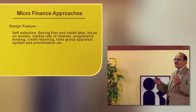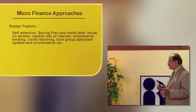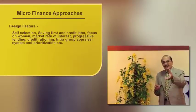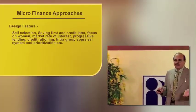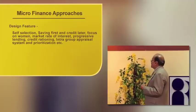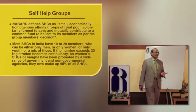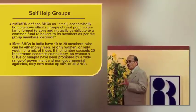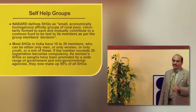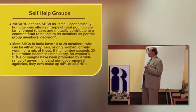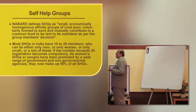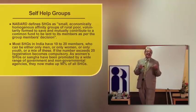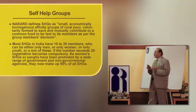The group works first by members contributing savings, and they are given interest on the savings pooled together. To give interest, there should be some earning, so lending activity takes place within the group at a rate of interest decided by the members. NABARD has defined SHG as small, economically homogeneous affinity groups of rural poor, voluntarily formed to save and mutually contribute to a common fund to be lent to its members as per the group members' decision. The savings and lending activities undertaken by the group are as per decisions taken by the members.